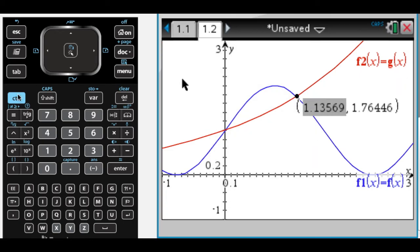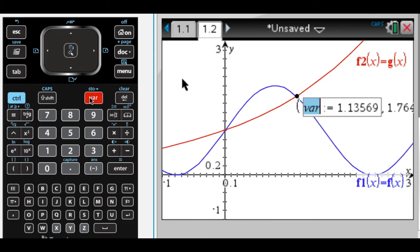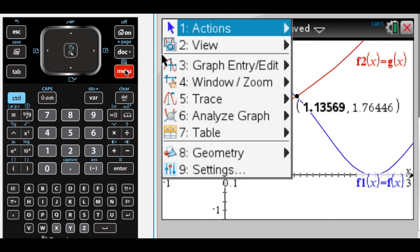I'm going to store that. So I click it, control, store. I'm going to call it A. And right now I'd write on my paper, let A equal 1.13569. If you're not seeing all those decimals, it's okay because once you save it, it doesn't really matter.